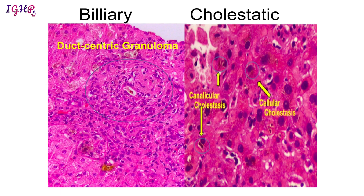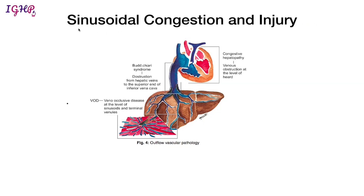This slide shows a biliary pathology with a ductocentric granuloma — a duct surrounded by aggregates of epithelioid histiocytes — representing non-caseating granulomatous destruction of the bile duct consistent with biliary pathology. This other slide shows a cholestatic pathology with accumulation of bile within hepatocytes (cellular cholestasis) or within canaliculi (canalicular cholestasis).